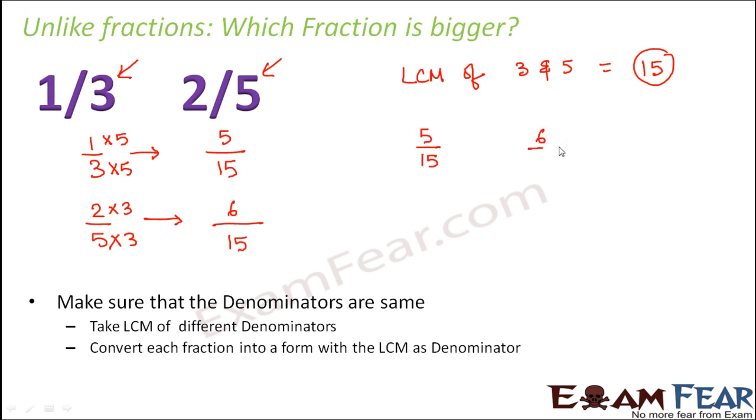Now it is easy to compare 5 by 15 and 6 by 15. So out of 5 and 6 which is greater? 6 is greater. Now 5 by 15 is same as 1 by 3 and 6 by 15 is same as 2 by 5. So we can say that 1 by 3 is less than 2 by 5.